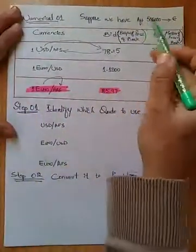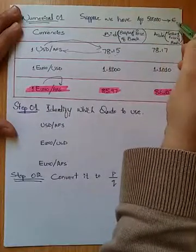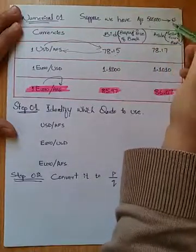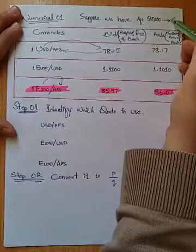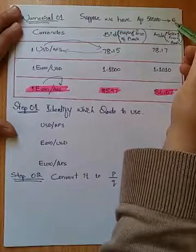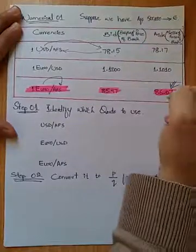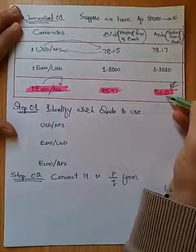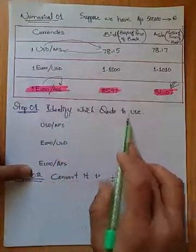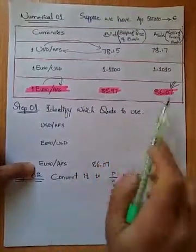If I am converting CHF into euro, it means I am selling CHF and I want to purchase euros. I want to buy euros. If I am buying, then obviously the bank is selling. If I am buying euros, then the bank is selling euros to me, and the selling price of the bank is called ask. So I am going to use the price 86.07 — on every one euro I buy, I must pay this much money. I will write here: I am going to use the 86.07 quote.